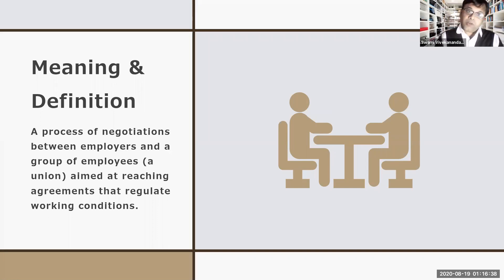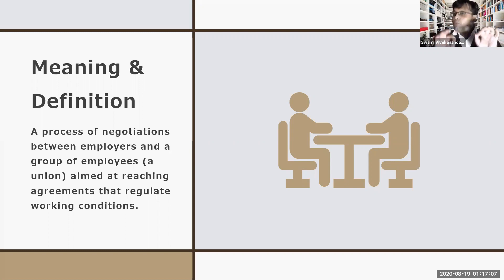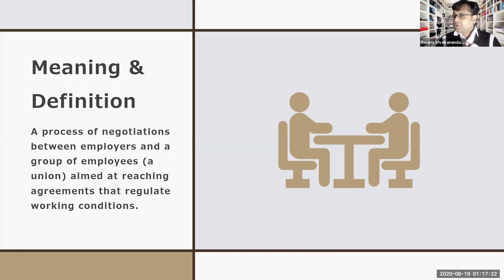Collective bargaining is a process of negotiations between employers and a group of employees — possibly a union — aimed at reaching agreements that regulate working conditions. The employer, or the employer's representative, and the group of employees sit together and discuss various aspects of working conditions. When both parties agree, they sign a document — that is called the collective agreement.